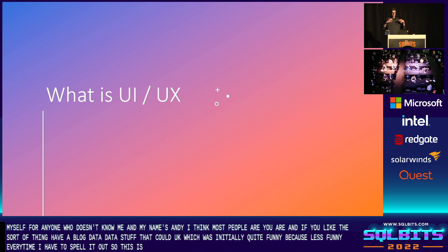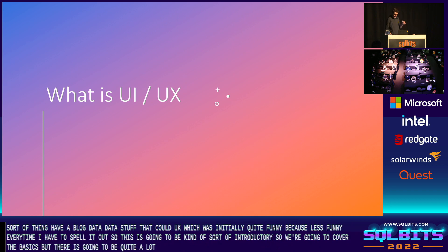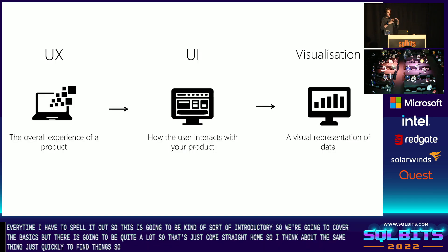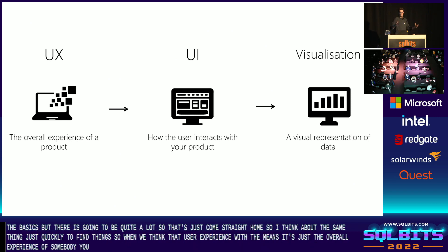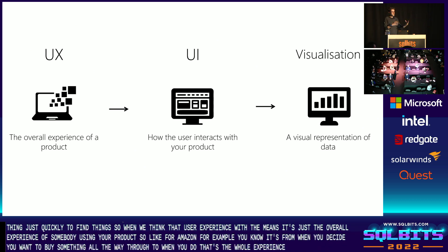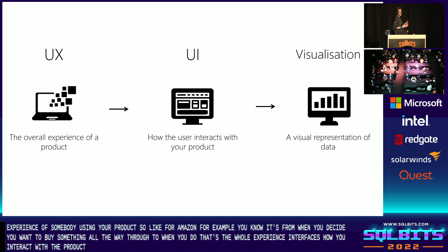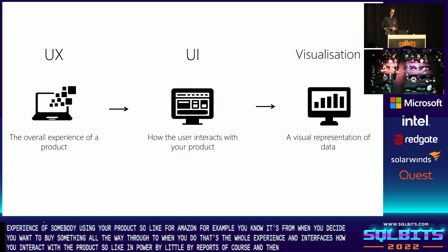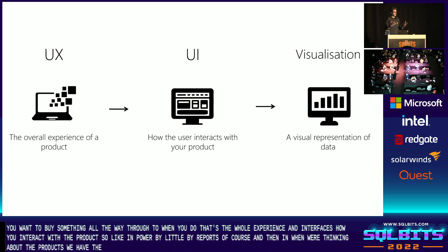So this talk is kind of aimed at a bit of an introductory level — we're going to cover off the basics, but there is going to be quite a lot, so let's just jump straight in. Just to make sure we're all thinking about the same thing, we'll quickly define things. When we think about user experience, that basically means the overall experience of somebody using your product — so like for Amazon, it's from when you decide you want to buy something all the way through to when you do. Then the user interface is how you interact with the product, so in Power BI that would be our Power BI reports. And then when we're thinking about data products, we have visualizations, which are just data that's been visualized to make it easy to understand.